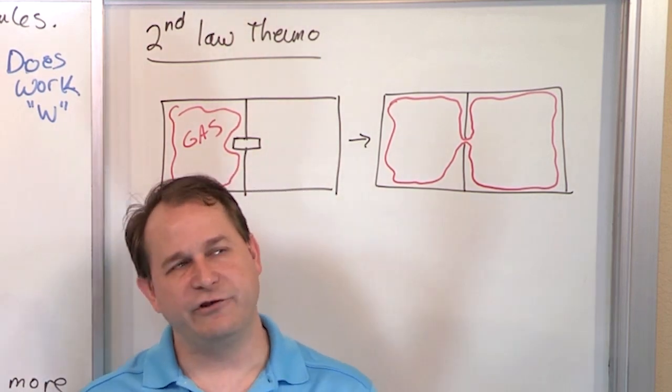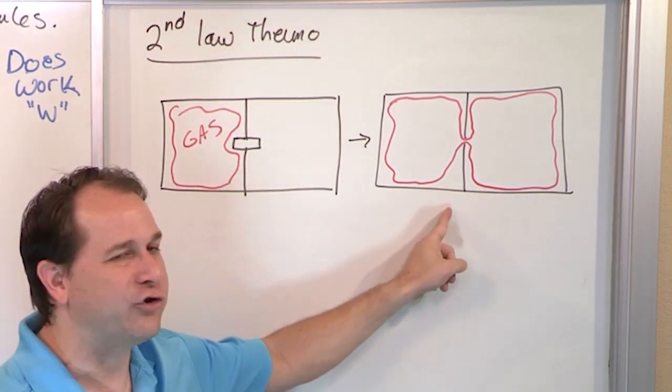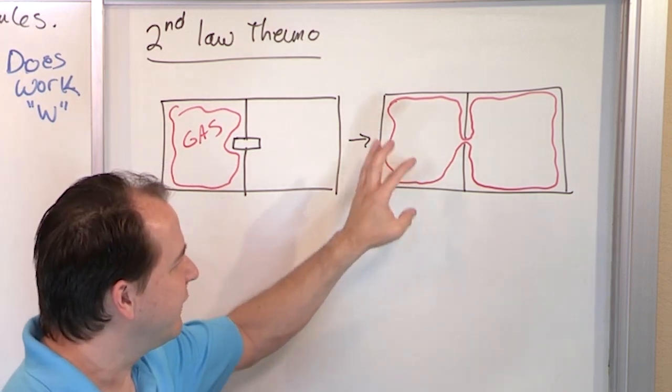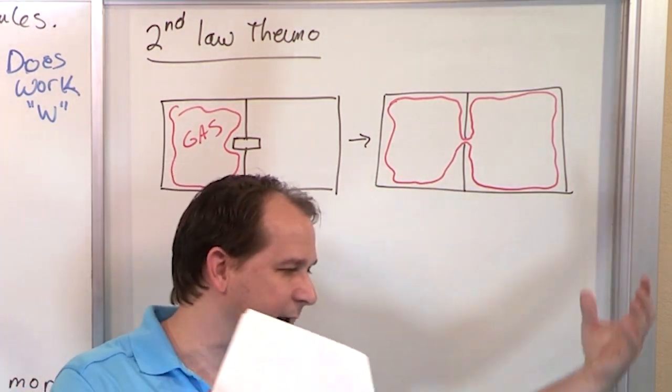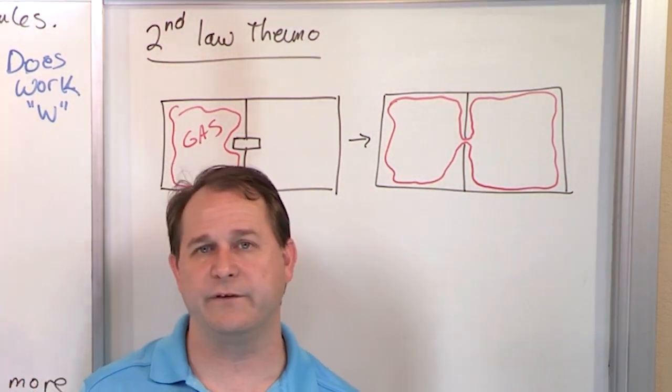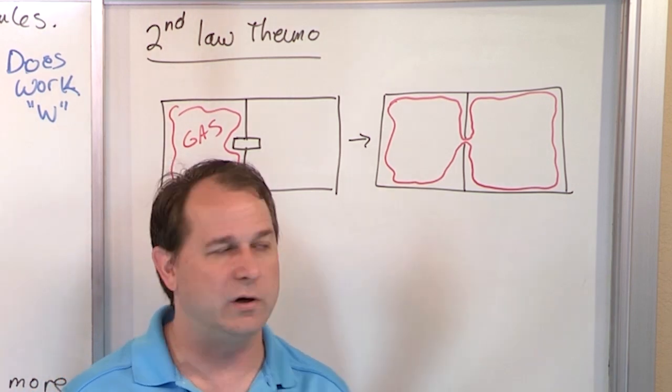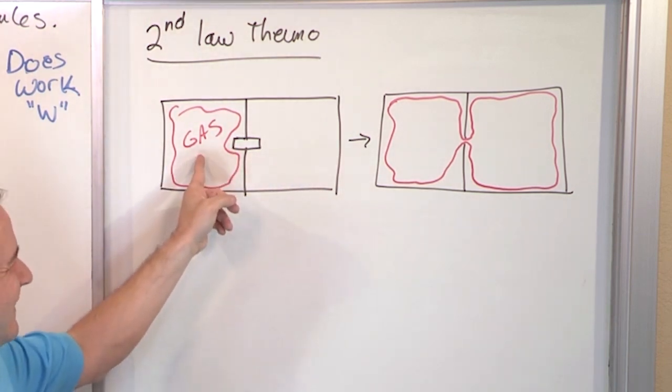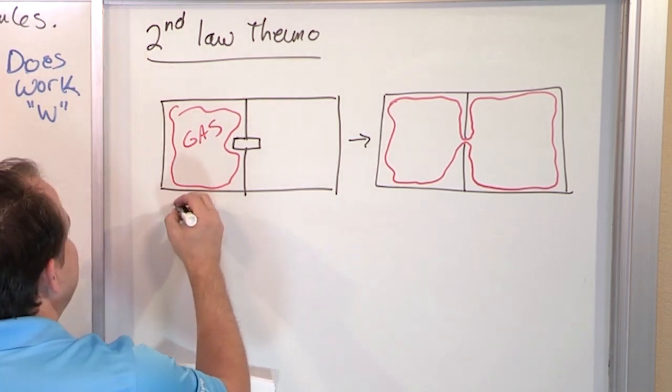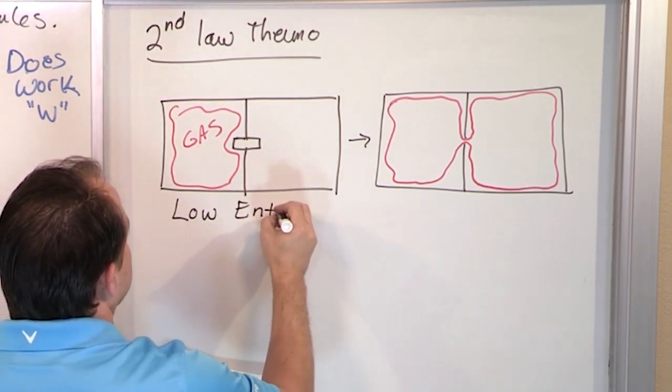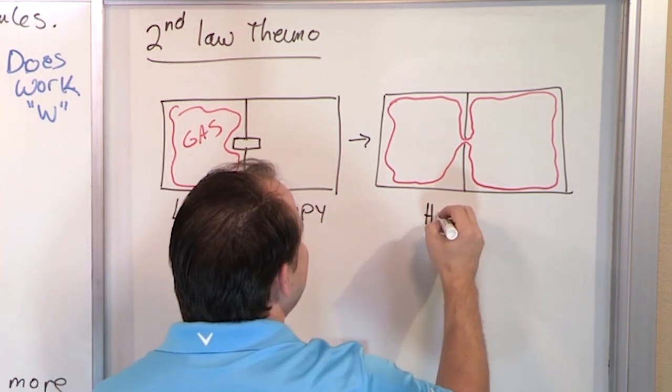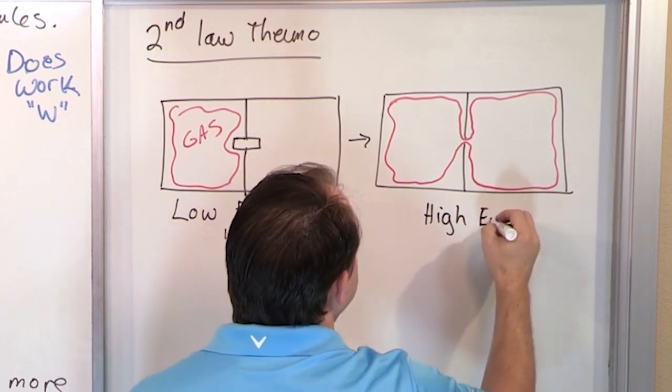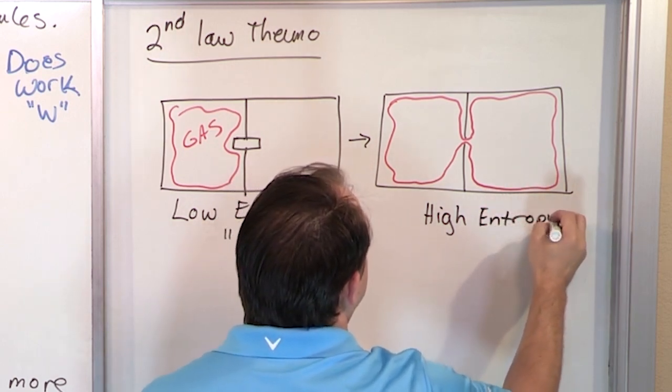And the reason it does that, or I shouldn't say the reason, but an observation is that this system has greater disorder. In other words, there are more places for the gas to be because it's a bigger space. So gas can be here, gas can be there, gas can be here, and they can all be moving at different speeds. This side has greater disorder. This side has less disorder. So what we say in physics is we say this has low entropy, and we use the letter S to talk about entropy. And this has high entropy or higher entropy, S.